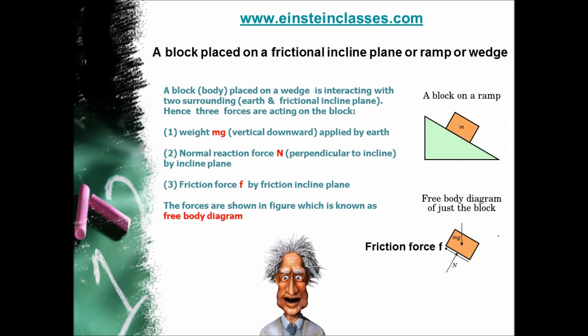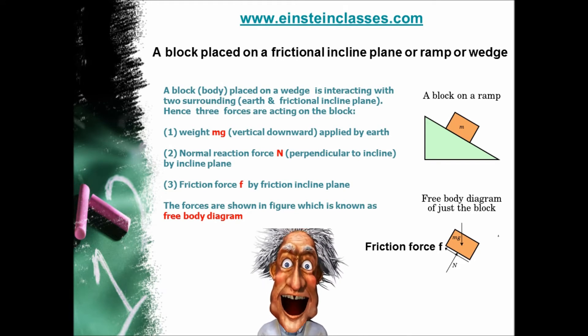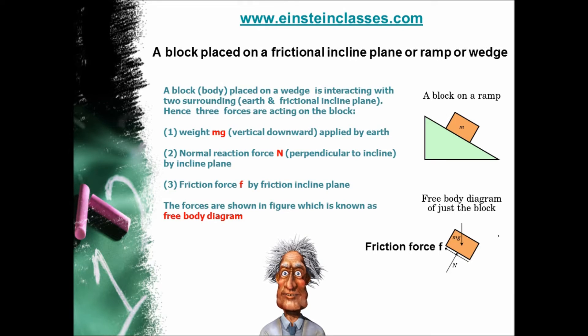Here you can see a block is placed on a frictional incline plane. Now we have to analyze what are the different forces acting on the block. The block is interacting with two surroundings. One surrounding is earth, due to which a vertical downward force, weight of block, is acting. Another surrounding is ramp.